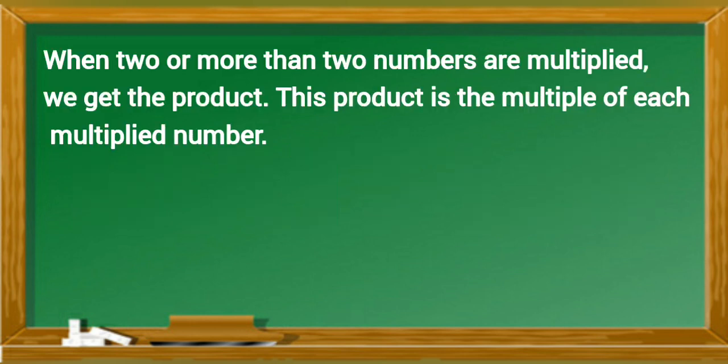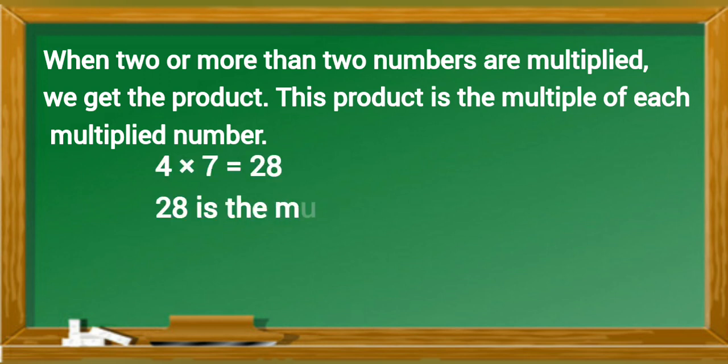When two or more than two numbers are multiplied, we get the product. This product is the multiple of each multiplied number. For example, when four multiplied by seven, it gets twenty-eight. So twenty-eight is the multiple of four and seven.